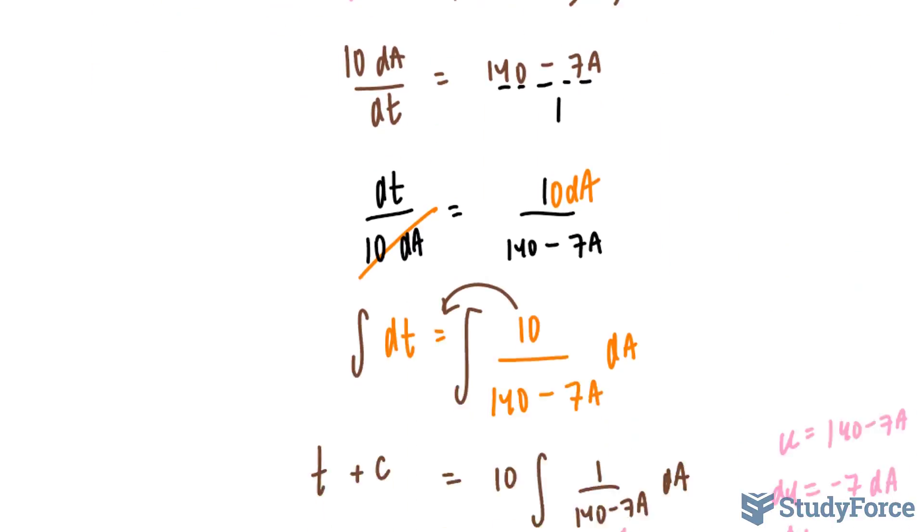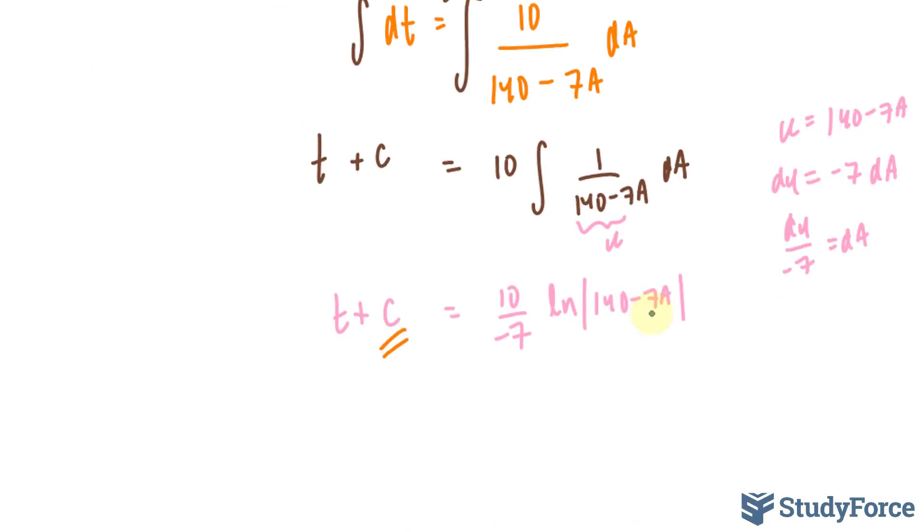So I can use this important piece of the puzzle, substitute 40 into here and 0 into here, and I can find out what c is equal to. c is equal to 10 over negative 7, ln of 140 minus 7 times 40.